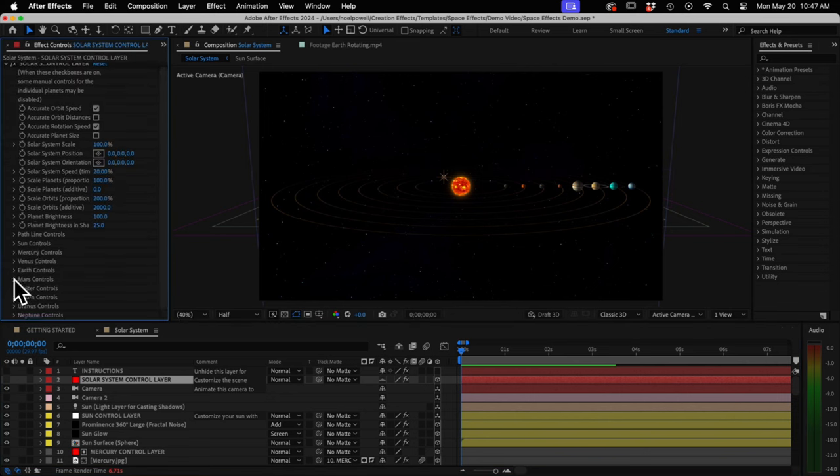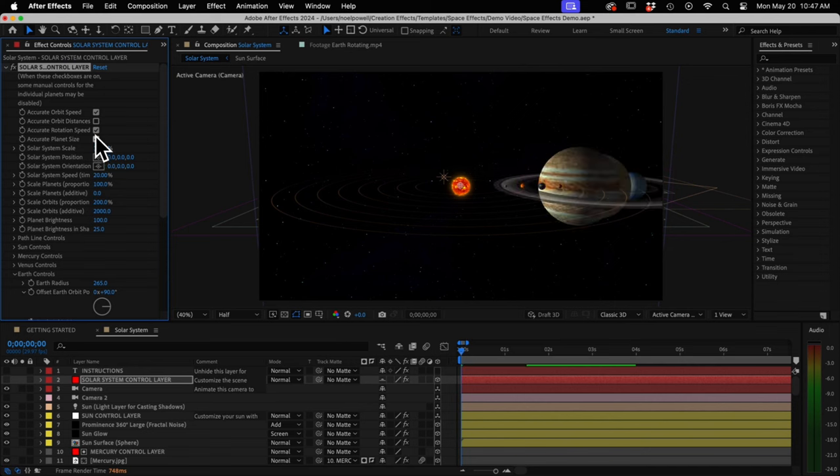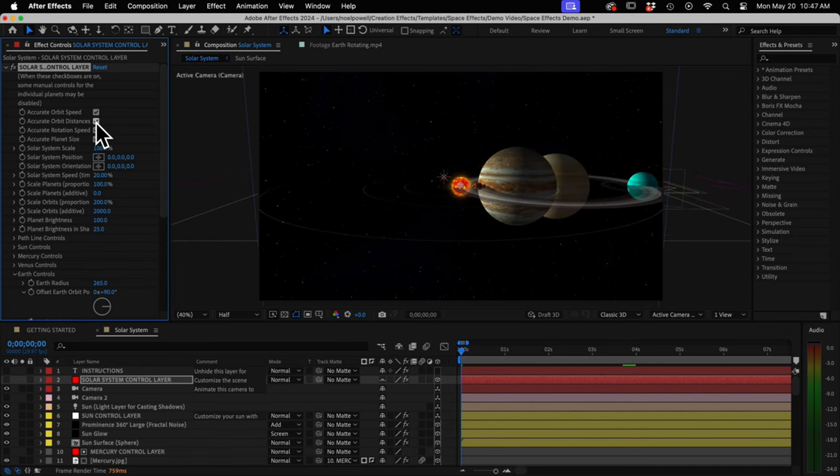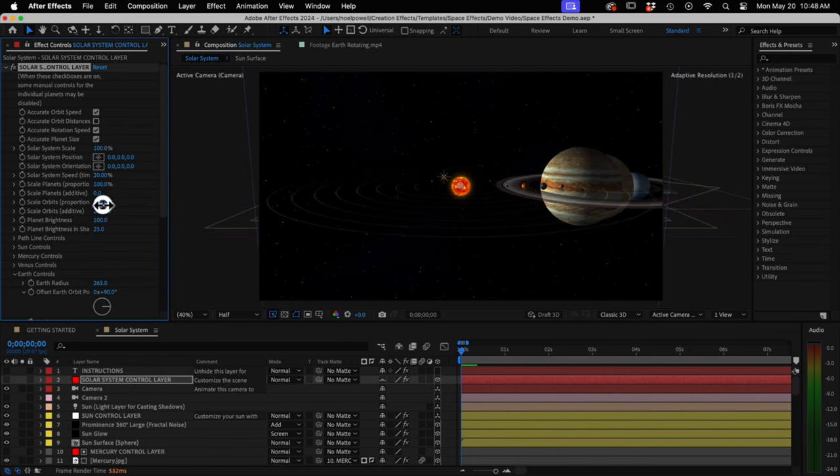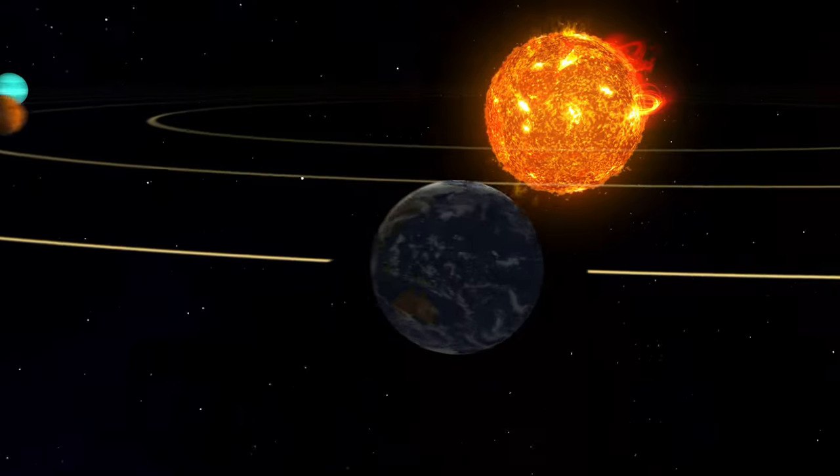You can adjust the lighting and customize the rotation and orbits of each planet. Or there's some checkboxes at the top where you can quickly give it scientifically accurate rotations, orbits, and proportional planet sizes. It's all designed to give you the best-looking animation with the least amount of work.